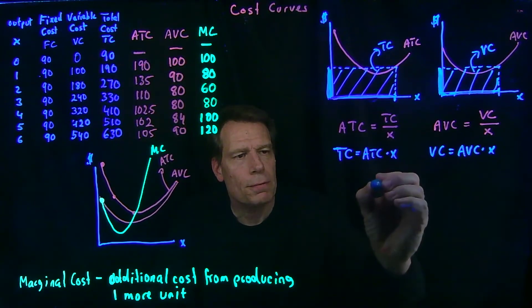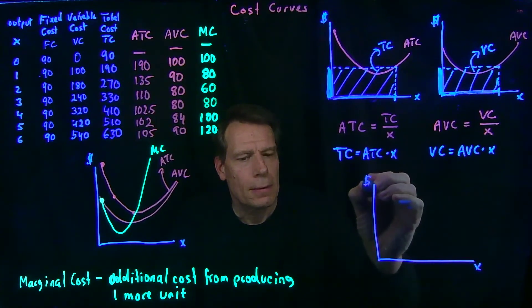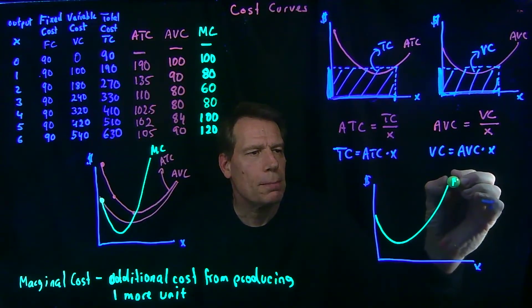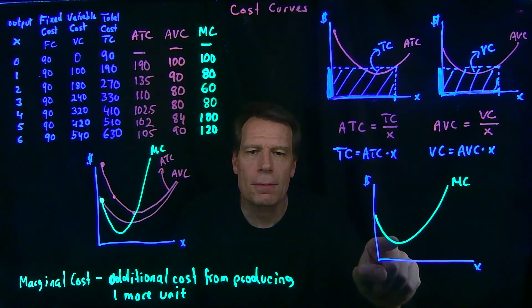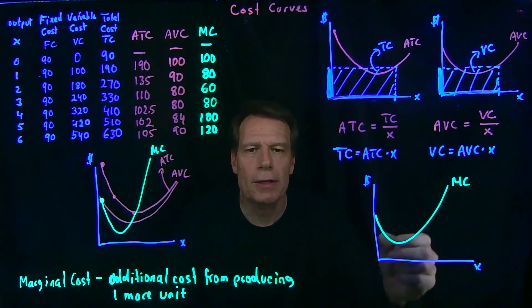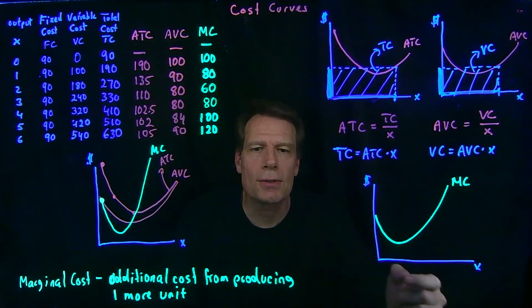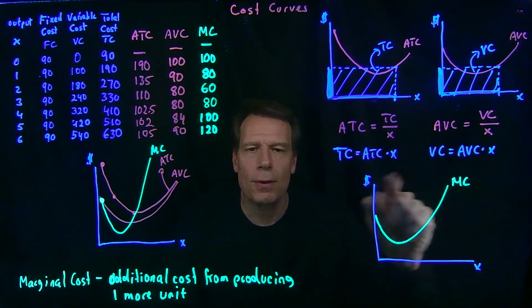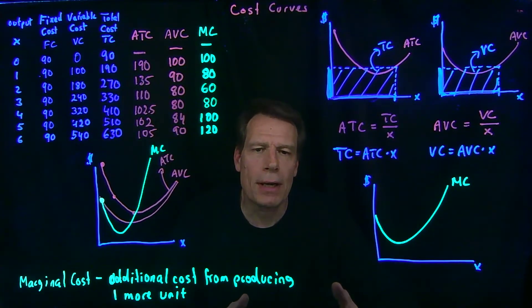Now we have a marginal cost curve that, isolated by itself, also has a U-shape. This tells us that initially it's getting easier and easier to produce — the additional cost for producing more goods is smaller and smaller. But eventually, the additional cost of producing an additional unit gets larger and larger, and it gets harder and harder to produce. This is a feature of many real-world production processes.